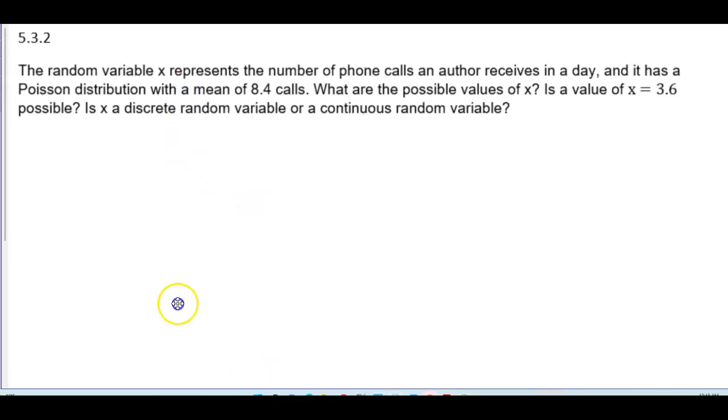The random variable x represents the number of phone calls an author receives in a day, and it has a Poisson distribution with a mean of 8.4 calls. What are the possible values of x? Is a value of x equals 3.6 possible? And is x a discrete random variable or continuous random variable?